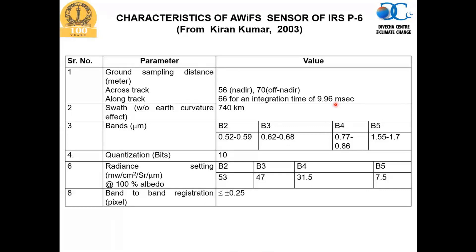The satellite's swath is 740 kilometers, so at any given time the satellite can make observations over 740 kilometers. It has four spectral bands: 0.52 to 0.59 micrometers, 0.62 to 0.68 micrometers, 0.77 to 0.86 micrometers, and 1.55 to 1.71 micrometers — the SWIR band.